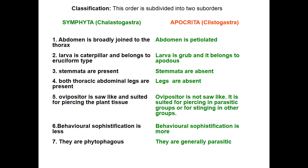Sixth: Symphyta show no social or behavioral sophistication — there is no caste system in Symphyta, and they are mostly phytophagous crop pests. In Apocrita, there is greater behavioral sophistication, with caste systems involving males, females, soldiers, and workers. Examples include honey bees and ants, which show advanced social behavior and are generally parasitic on other insects.